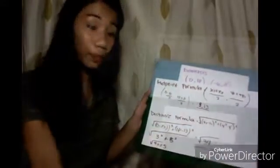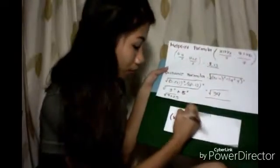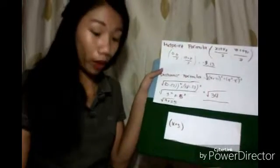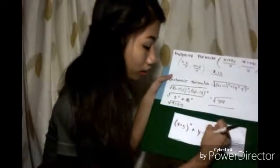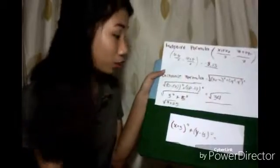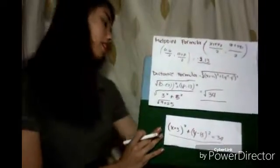We have our midpoint, we have our radius. The last thing to do is replace. It's x plus 3 squared plus y minus 13 squared, because it's positive. x plus 3 squared equals, the radius is 34. Our final answer is x plus 3 squared plus y minus 13 squared equals 34. We're not yet finished because we have to plot.